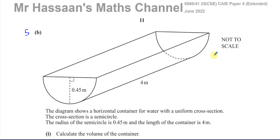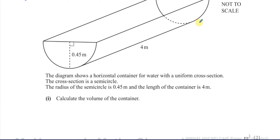This question is about mensuration — specifically volumes. We've got a horizontal container for water with a uniform cross-section. The cross-section is a semicircle. The radius of the semicircle is 0.45 meters, and the length of the container is 4 meters. Calculate the volume of the container.